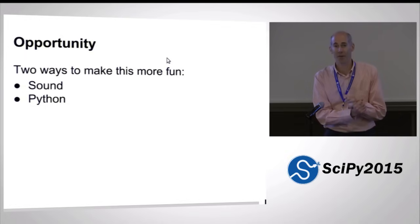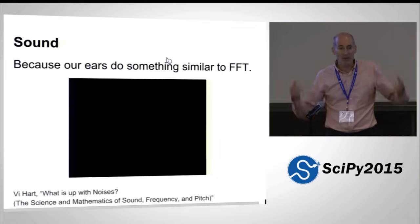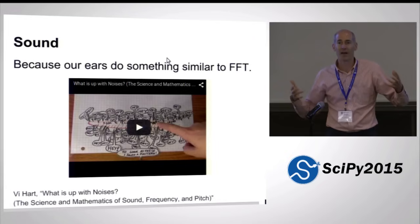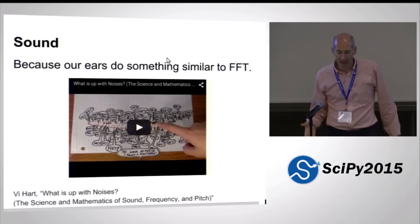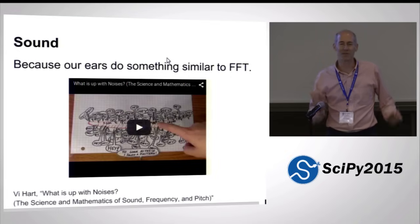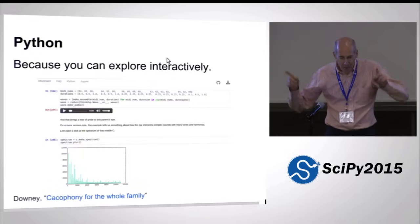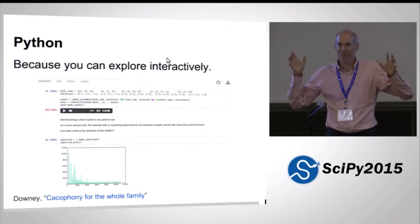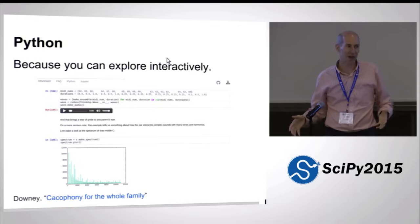There are a lot of ways to make this really fun. So one of them is by using sound, and one of them is by using Python. The natural reason to use sound is that what's going on in our ears is a lot like spectral analysis. The Fourier transform is doing something that's like human hearing. You don't have to slog through all the mathematics before you get to try stuff out. You can do things in an interactive way.